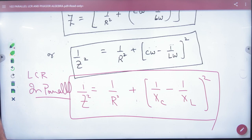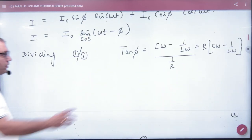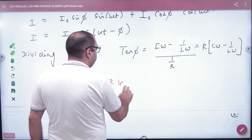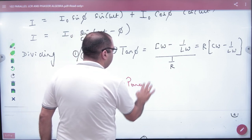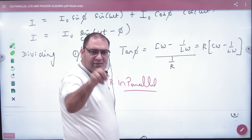Second, if they ask for tan(φ) value, then write like the impedance triangle. What did we do in impedance triangle? We did tan(φ) = (X_L - X_C)/R.